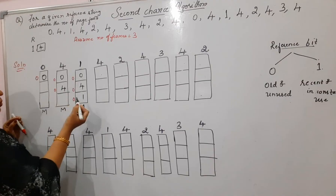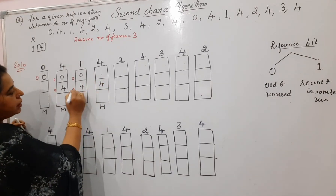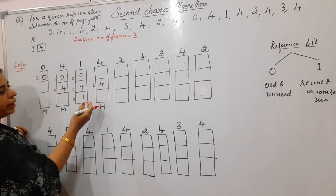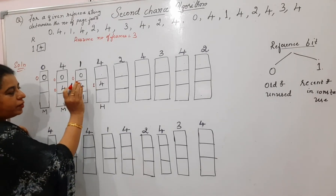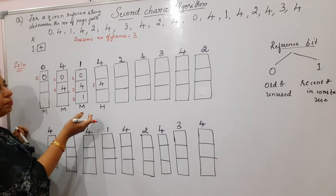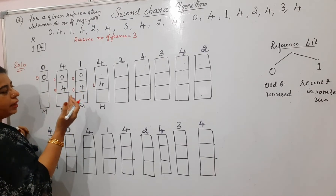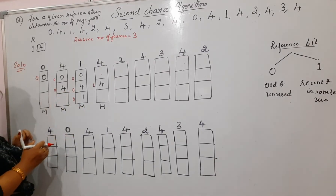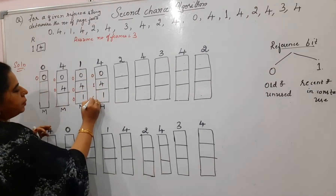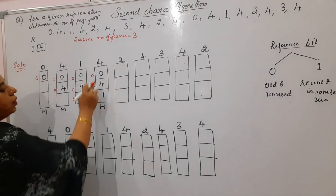Next comes page 4. Page 4 is already inside the memory — so there is a hit. But at the same time, you must change its reference bit from zero to one. This one indicates the page is in constant use; next time, even if its turn comes for replacement under FIFO, you will not replace it. The reference bit acts as a lifeline, increasing that page's lifespan in memory.